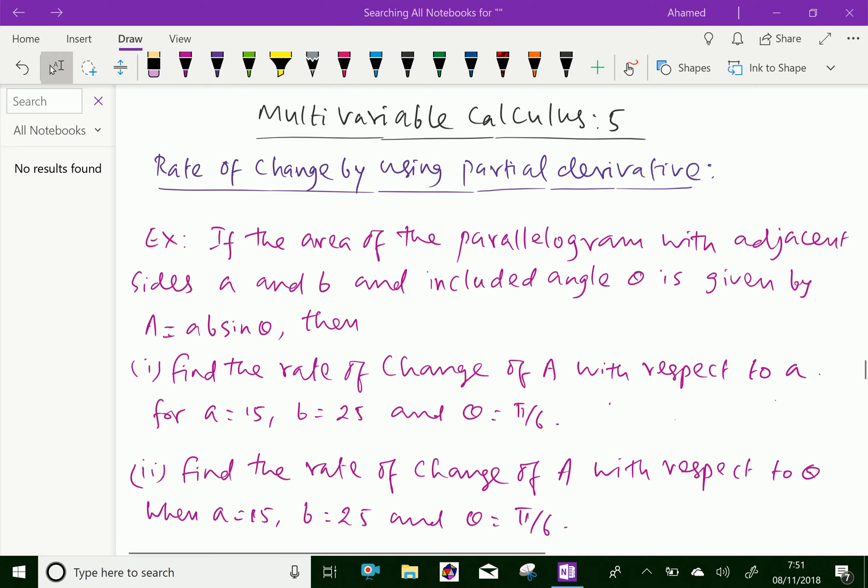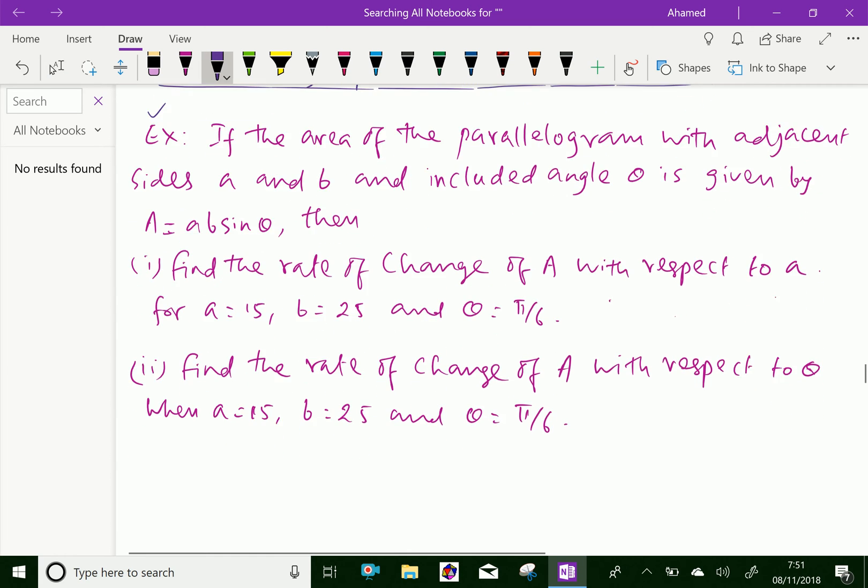Look at this example. If the area of the parallelogram with adjacent sides a and b and included angle θ is given by A = ab sin θ, then find the rate of change of A with respect to a for a = 15, b = 25, and θ = π/6.